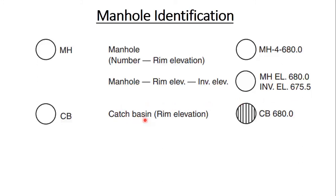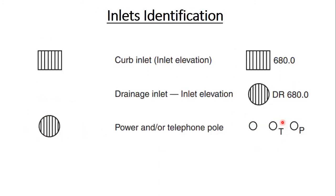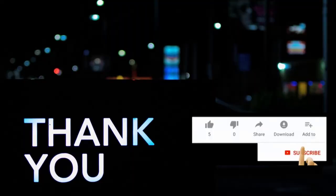The catch basin receives stormwater and is represented by the symbol CB, or an alternative symbol can also be used. For inlet identification, the curb inlet is seen on roads and streets and receives rainwater and stormwater; it is shown with its elevation, for example 680. A round symbol is used for drainage inlet, labeled DR with elevation 680. Power and telephone poles can be shown with a circle marked T for telecom and P for power.